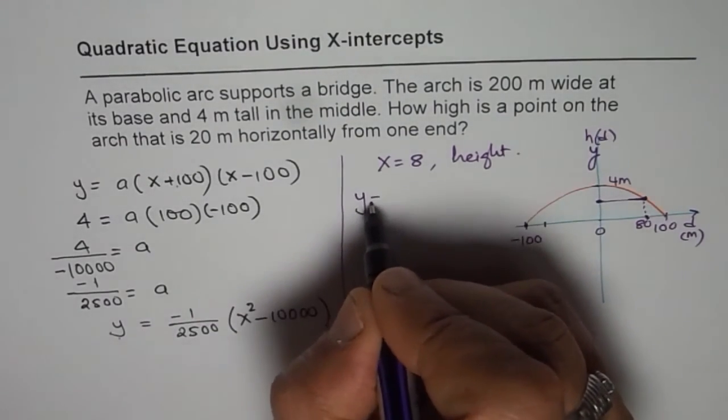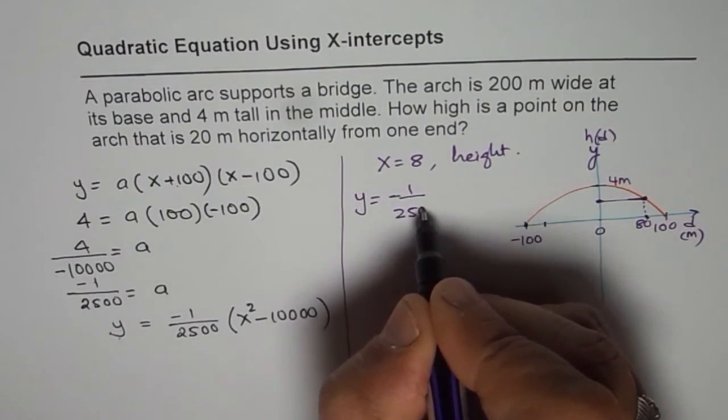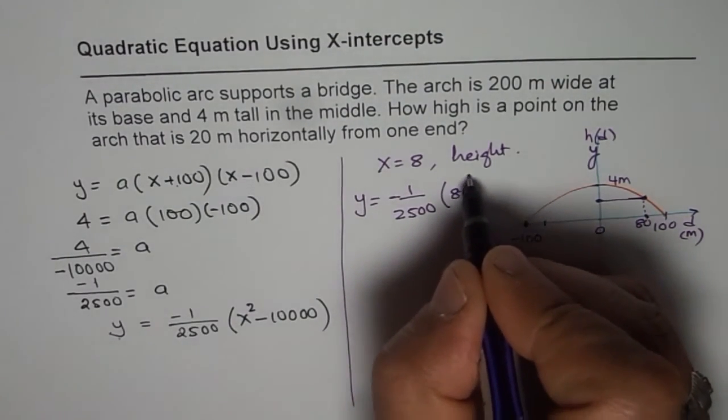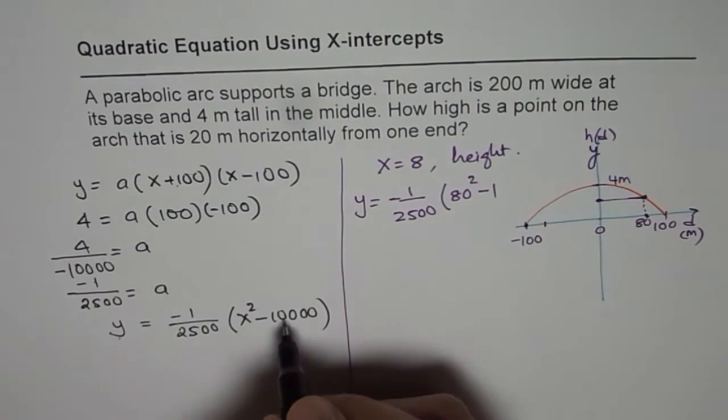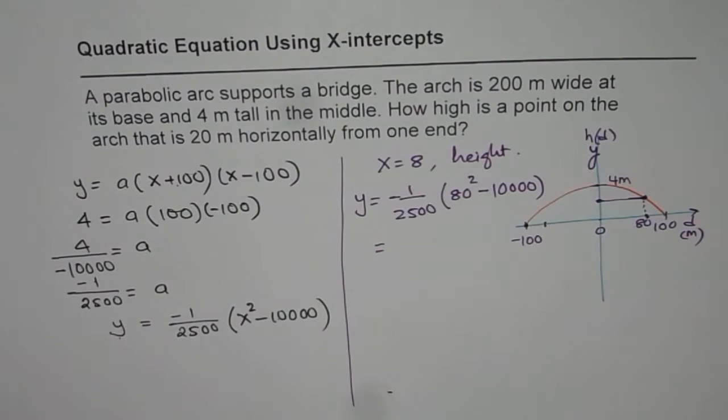So this y height for us is equal to minus 1 over 2500 times (80 squared minus 10,000). So let's use the calculator and find the answer.